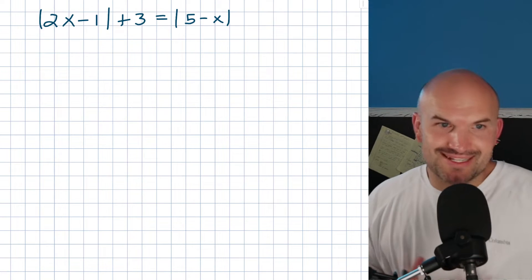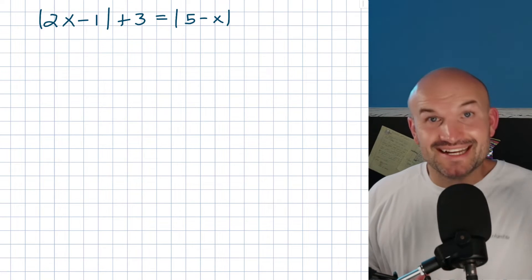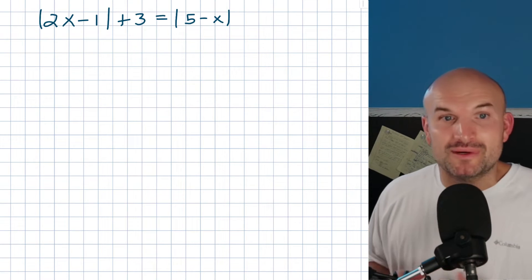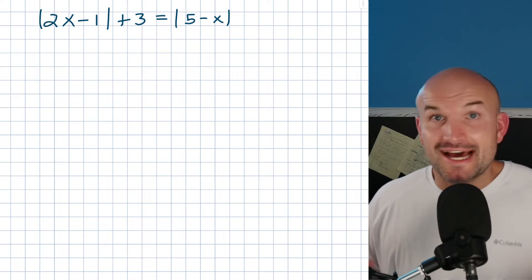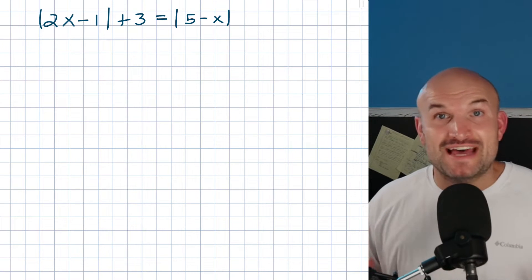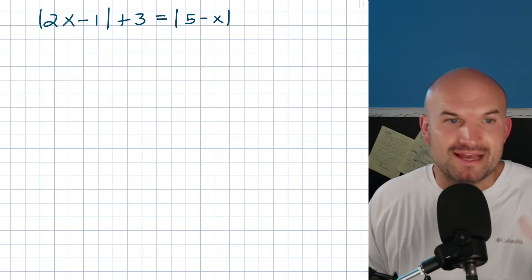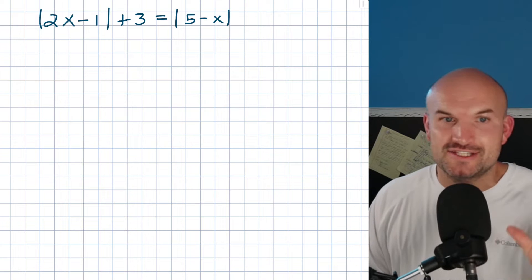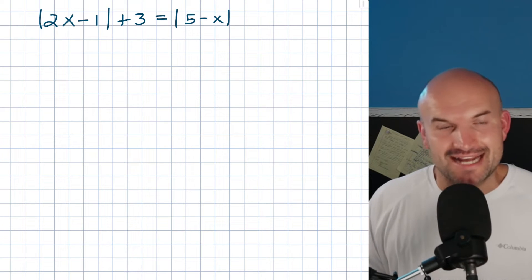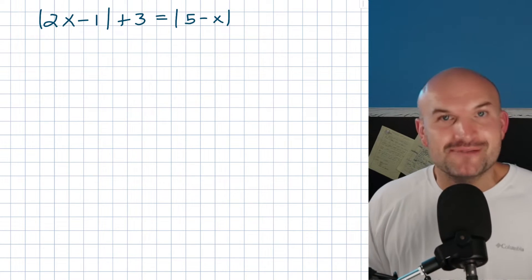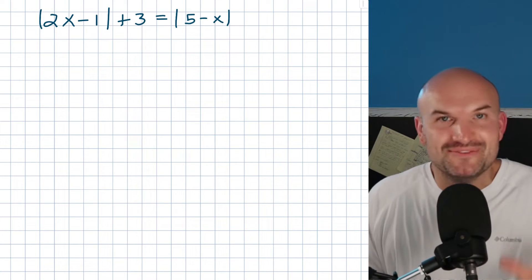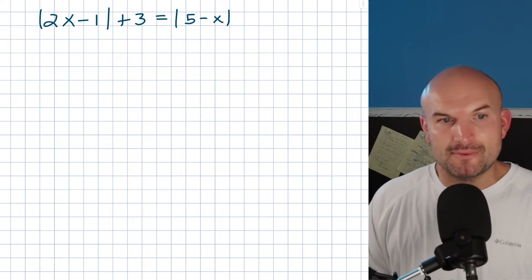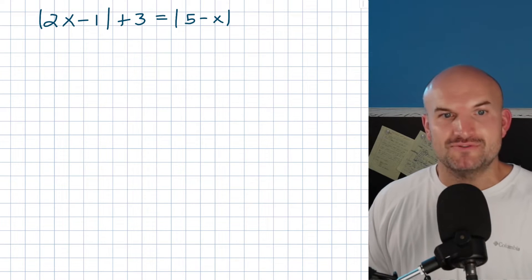In this video, I want to tackle a difficult problem that a lot of students struggle with when trying to understand how to solve absolute value equations — specifically when we have an absolute value sign on both the left and right hand side. To make this equation a little more fun, I'm also going to add in a plus three.